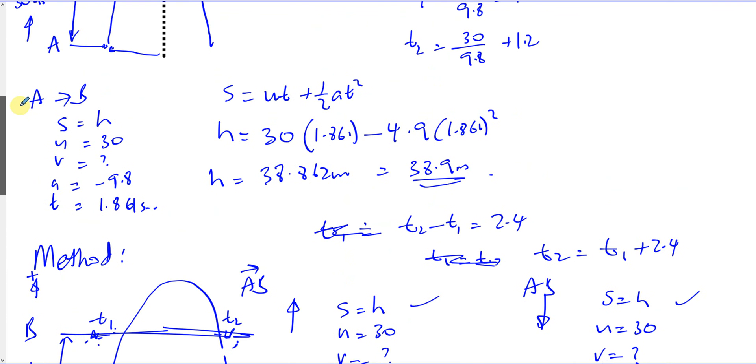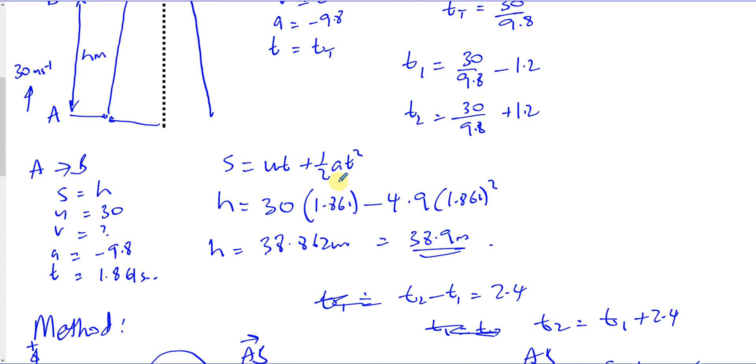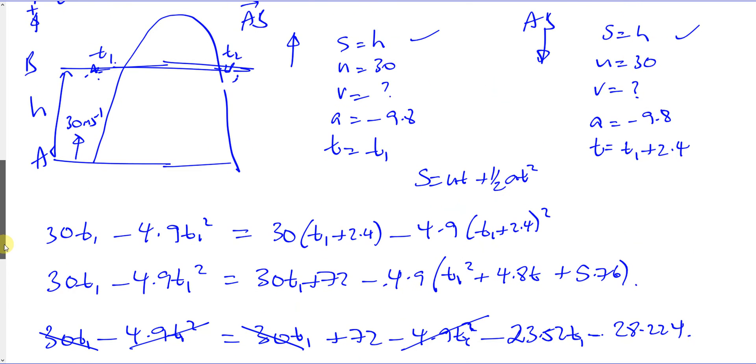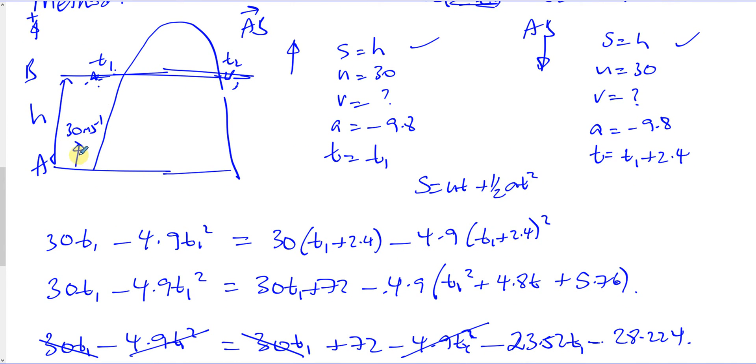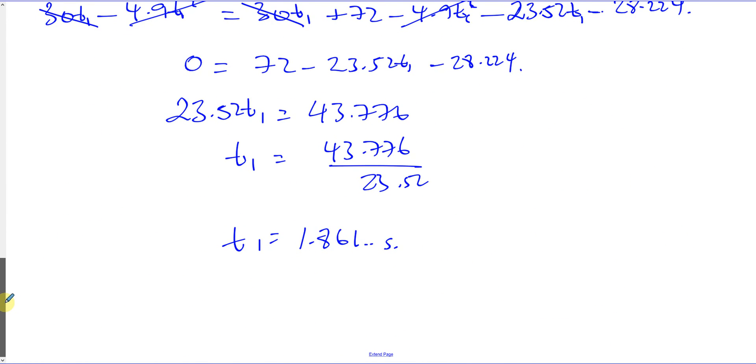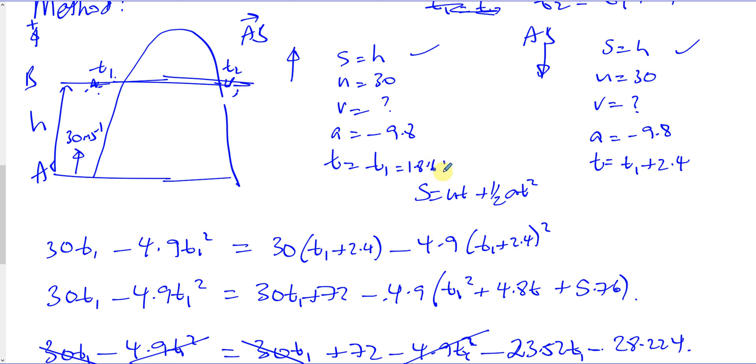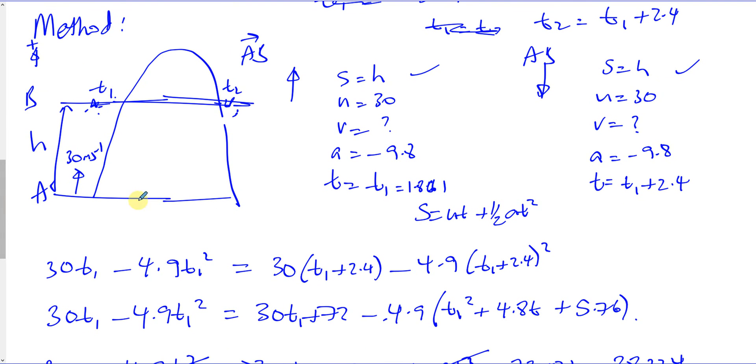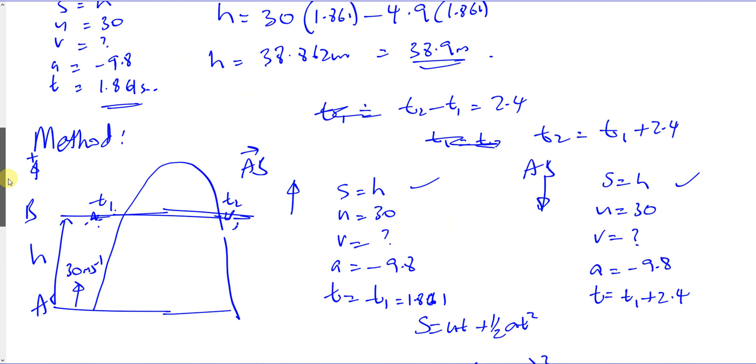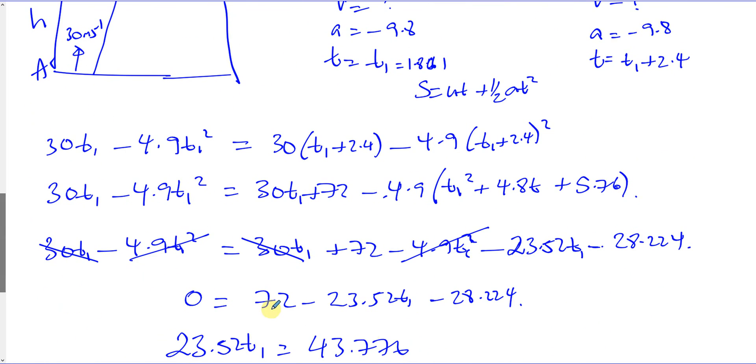That was the time we found here, that was the time 1.861 seconds, and then we can put it back into the same equation here to find the height. Once we've found what the time is that it's at B, we can then use SUVAT to find what the height of B is, because we now know what this is, this is equal to 1.861 now. So once you've found that, you can put that back into this SUVAT, S equals UT plus half AT squared, and it will give you exactly the same answer that we found when we did it over here, 38.9 meters. So there's the answer to that question.